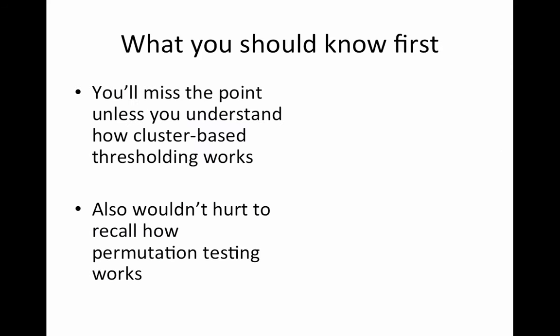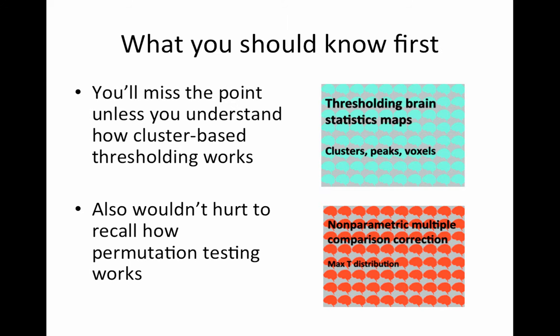What should you know first? You'll miss the point of this whole thing unless you understand how cluster-based thresholding works because this is trying to improve upon our standard cluster-based thresholding. And it also wouldn't hurt to recall how permutation testing works. Although this method is primarily about a new voxel-wise statistic, the only way we can assess that statistic is to use permutation testing because we have no idea what the nonparametric distribution would even be. Plus to control multiple comparisons, it is the easiest route to go. So you can revisit these talks: thresholding brain statistics maps, clusters peaks and voxels, and nonparametric multiple comparison correction using the max t distribution.